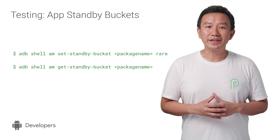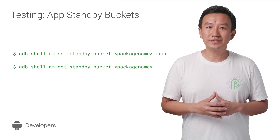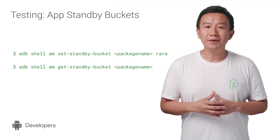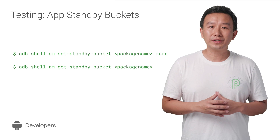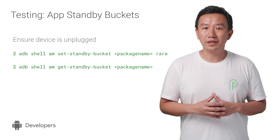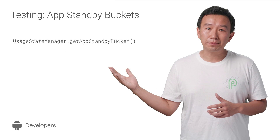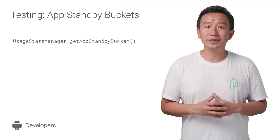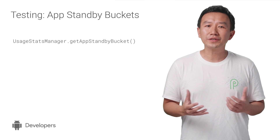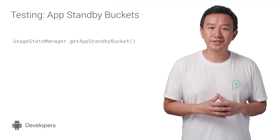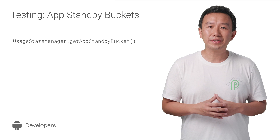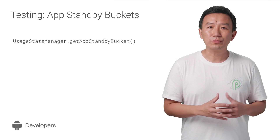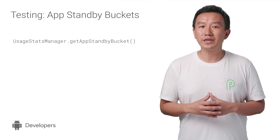You can use a couple of ADB commands to set and retrieve buckets for your package. Before running them, make sure your device is unplugged. There are also framework APIs to get an app's current bucket, or you can use UsageStatsManager to query the list of events associated with your app, which includes bucket changes.